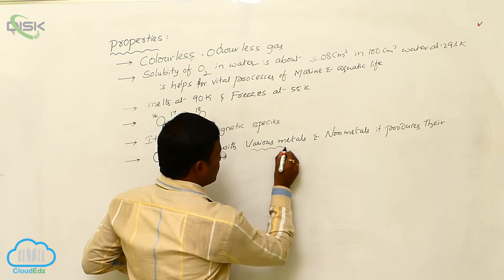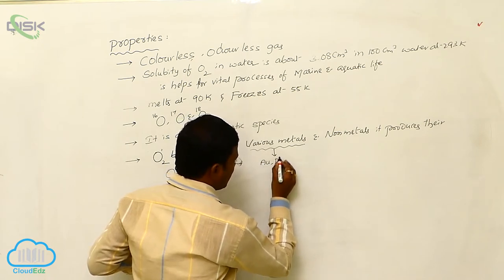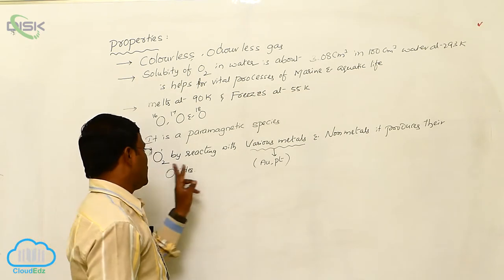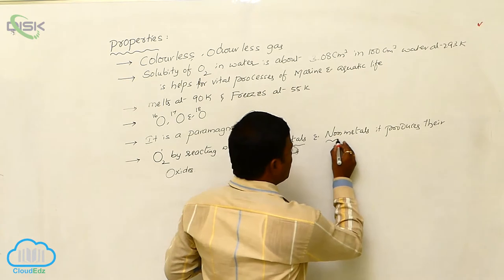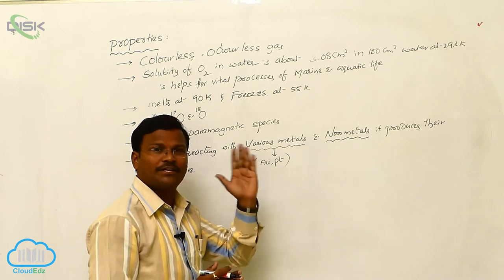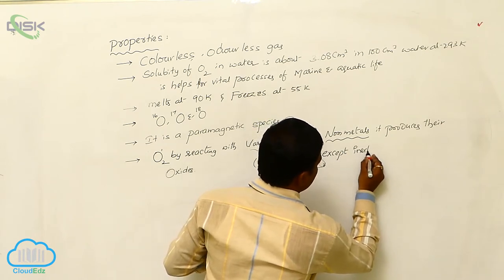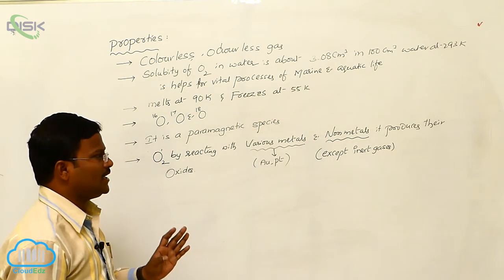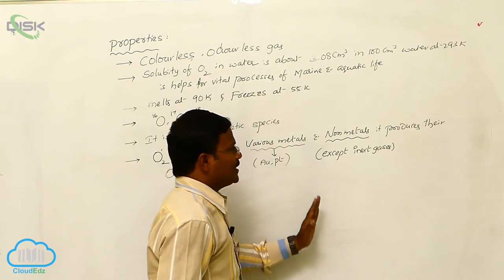Some of the metals are not reactive with oxygen. They are gold and platinum. So this type of metals are nonreactive with oxygen, means they never react with oxygen to produce oxides. Similarly, almost all types of nonmetals react with oxygen to produce their respective oxides, except inert gases or zero group elements like helium, neon, argon, krypton, radon. Xenon only to some extent reacts with oxygen to produce their oxides.